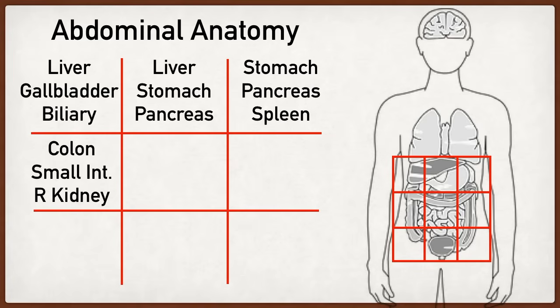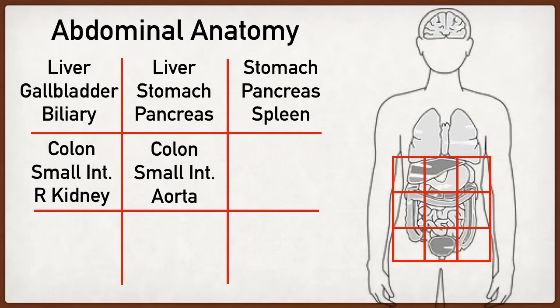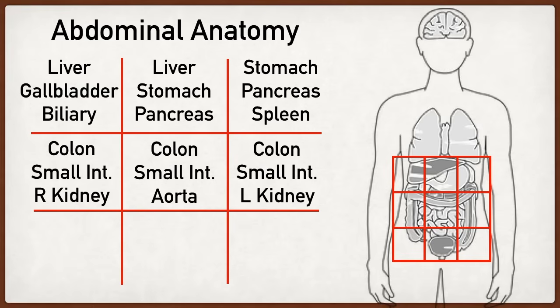We also have parts of the small intestine, and the right kidney sits back there as well. Traveling over to the umbilical region, we have the colon again — primarily the transverse colon — along with the bulk of the small intestine. Don't forget about the aorta as well, sitting behind those structures. Moving on to the left flank or lumbar region, it's primarily the descending colon, along with parts of the small intestine and the left kidney.